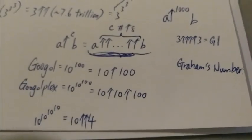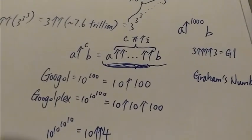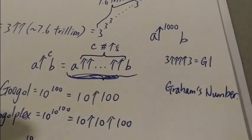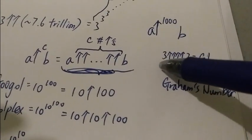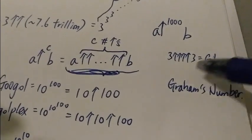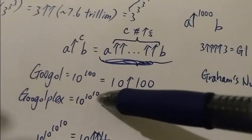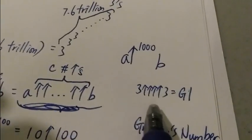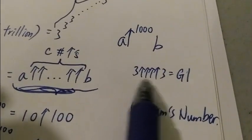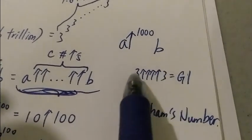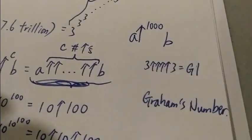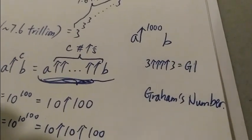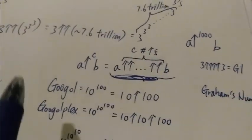And then one famous number that is well known to use the up arrow notation is, of course, Graham's number. For let's say G1, the first level of Graham's number is 3 four arrows 3, which is a very, very big number, way bigger than the googolplex. So as you can see here, there's only six symbols in here. So 3 with four arrows 3, and in just six symbols, it already represents a super huge number, a number that is way bigger than the googolplex.